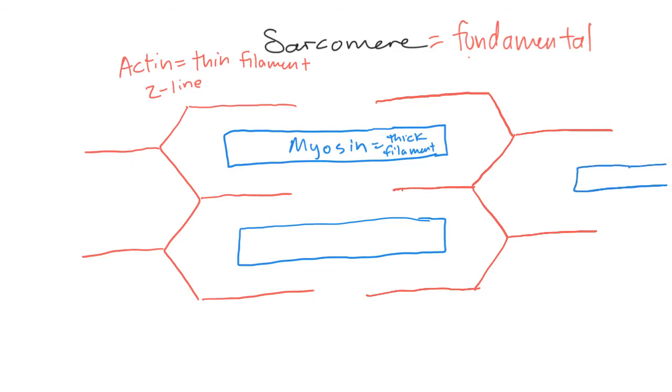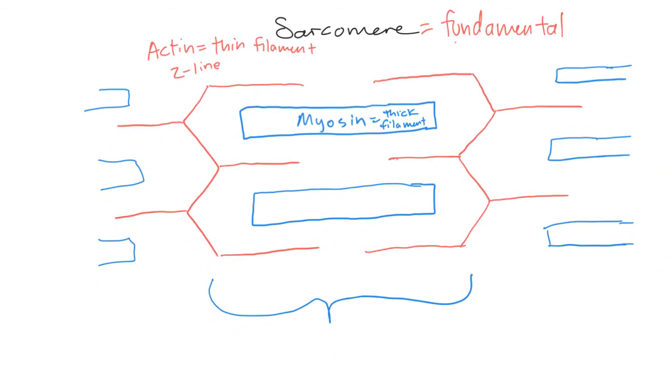And this just repeats itself over and over. So over here, you're going to have another myosin. And then over here, you're going to have another myosin. And it just goes over and over again for the length of the cell. All right. So what we have here, then, is overlapping parts of actin and myosin. And where the overlap occurs or doesn't occur has a specific name.